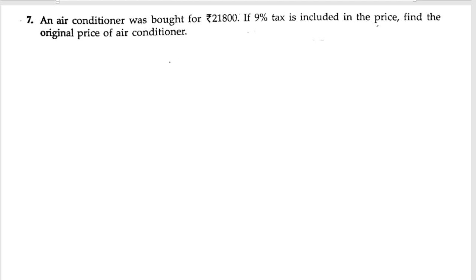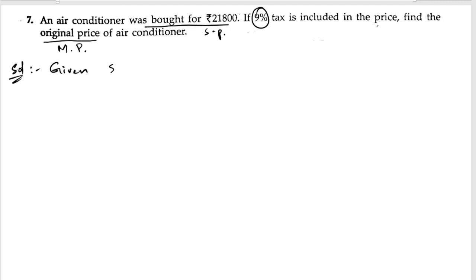Seventh problem: an air conditioner was bought for rupees twenty-one thousand eight hundred. So it was bought — that means they have given this as the selling price. If nine percent tax is included in the price, find the original price. So what is the original price? That means they are asking about the marked price of the air conditioner. Let us start the solution. First of all, we will write down the given information: the selling price is twenty-one thousand eight hundred, and the tax is nine percent.